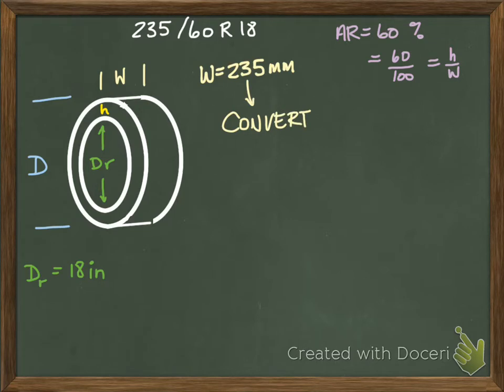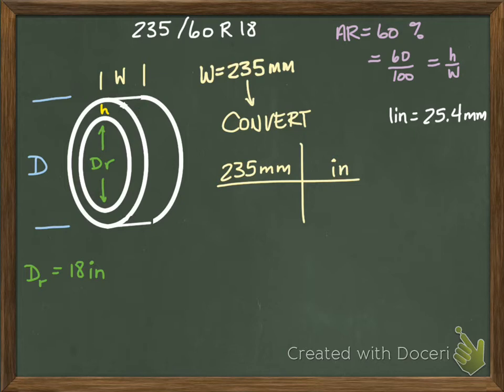So I know that one inch is 25.4 millimeters. I'm gonna take my width, so my width is 235 millimeters, and then I want to convert. So I'm gonna draw my little conversion thing. I want inches, so that's what I'm gonna put up top, and I have millimeters, so that's what I'll put on the bottom. So I have 25.4 millimeters and one inch, so my millimeters cancel. If I divide that out, I get 235 divided by 25.4. I get 9.25.